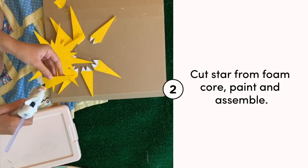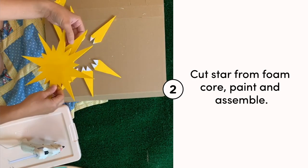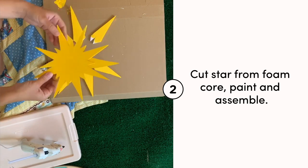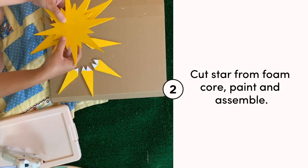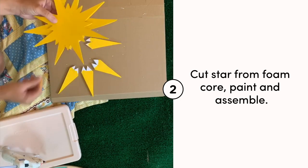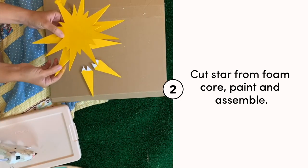To make the gold star for the background on the ferris wheel, you'll need foam core and yellow paint. I cut the star out using a straight edge ruler and an exacto knife.